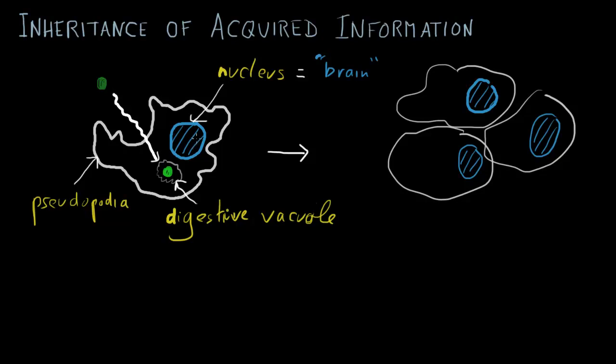And if it could think, then perhaps it could cunningly change its stored information to deal with some environmental challenge. Having changed the information, perhaps the amoeba could then pass it on to its child amoeba. In other words, acquired information would be inherited.